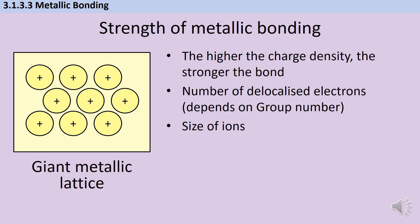So we need to know what the charge on the ion will be, which is of course intrinsically linked to the number of delocalised electrons. If a magnesium atom is going to make a 2+ ion, then it's going to lose 2 electrons. And it's also going to depend on the size of the ion. Don't forget that as you go down a group, the charge of the ions will be the same, but those atoms are getting bigger and bigger. So that same amount of positive charge is going to be sort of spread out over a bigger area.